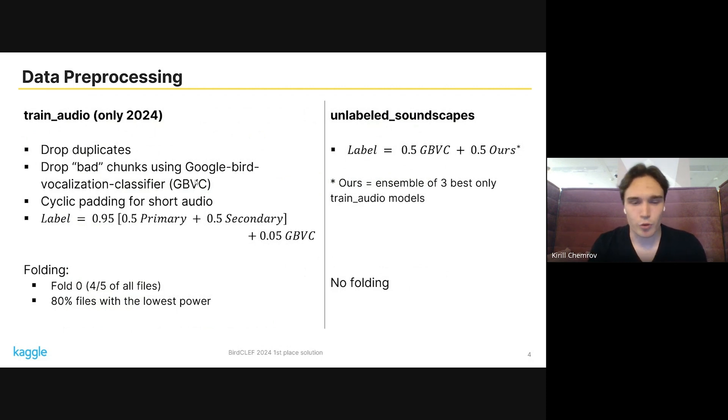There are some short audio in the data. In such case, we use cyclic padding. As there are secondary labels apart from primary ones, we combine them with equal values and also use some kind of label smoothing, adding a small part of several labels.